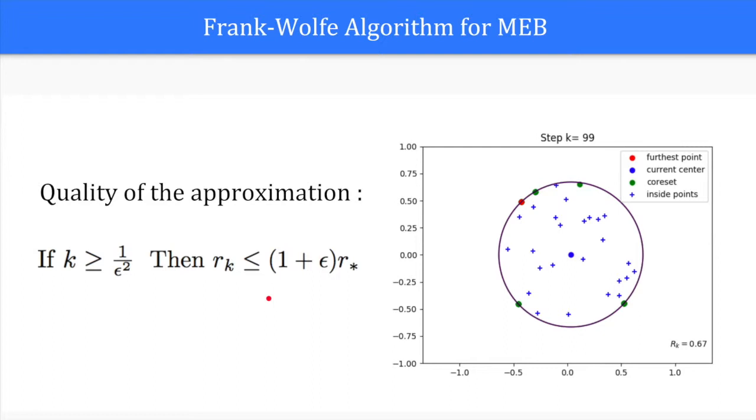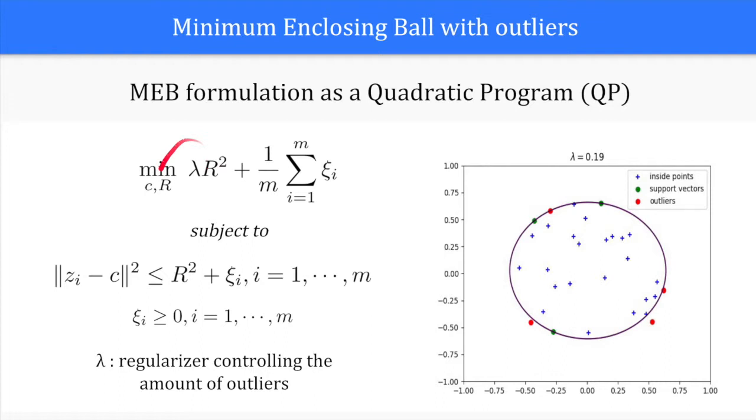The contour given by the MEB is very sensitive to outliers. We can overcome this issue by introducing a slack parameter lambda in the optimization problem. This parameter can be used to control the number of outliers. The proportion of outliers is bounded by lambda.